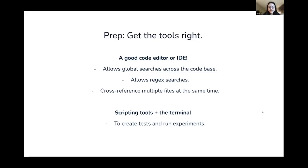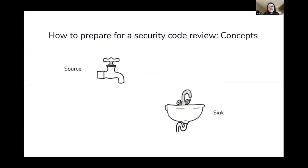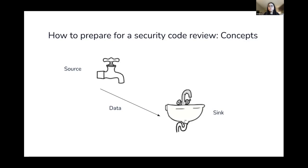There are a few code analysis concepts to understand. A 'source' refers to the code that allows a vulnerability to happen, whereas a 'sink' refers to where the vulnerability actually happens. For example, in a command injection scenario, the source would be a function that takes in user input, and the sink would be a function that executes system commands. If untrusted user input can get from the source to the sink without proper sanitization or validation, a command injection vulnerability exists. Many common vulnerabilities can be identified by tracking this data flow from sources to their corresponding sinks.